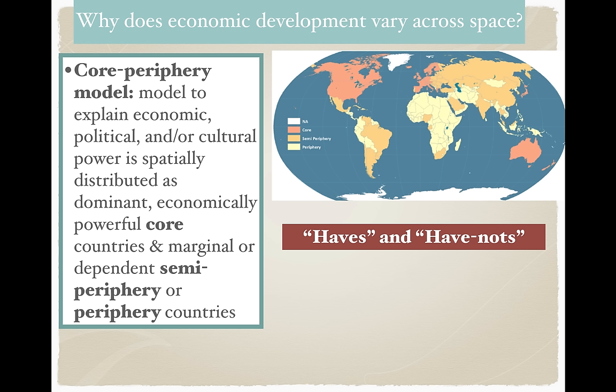We need to start more broadly with what's called the core-periphery model. This is not particularly difficult to understand because we've been talking all year about most developed countries versus least developed countries. The core-periphery model is a model used to explain the economic, political, or cultural power and how it's spatially distributed across the earth. In some places, they're the dominant, economically powerful, core countries. There are also marginal or dependent countries — semi-periphery or periphery countries.